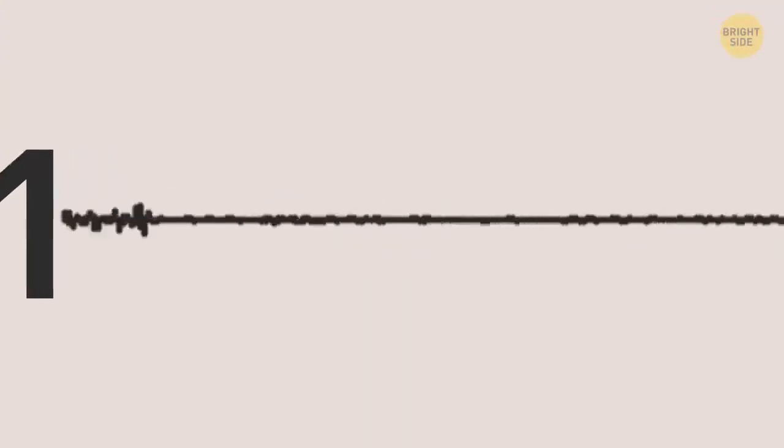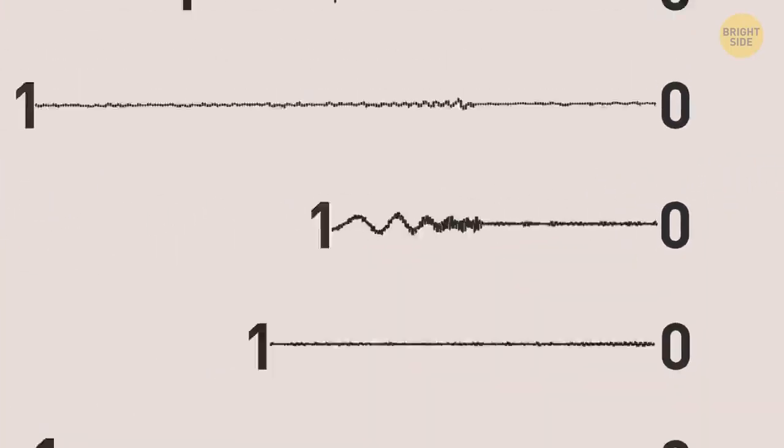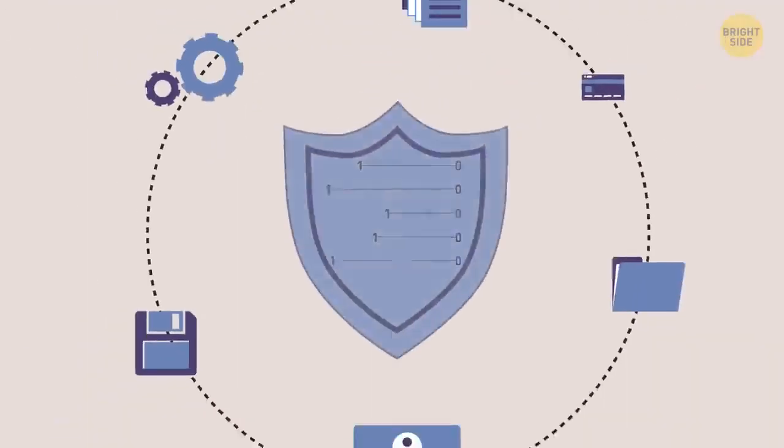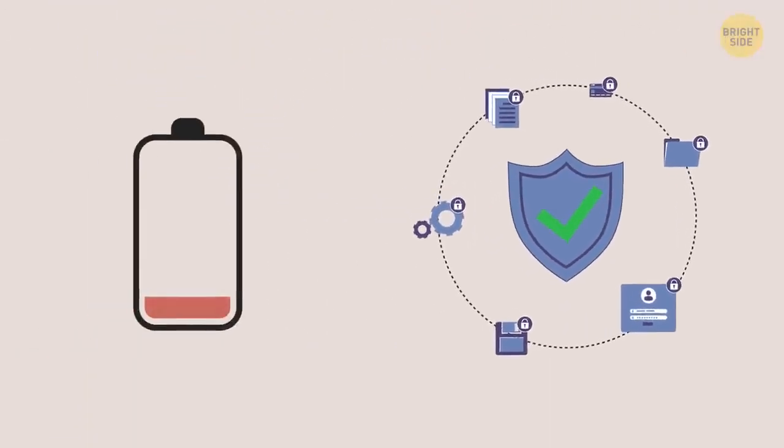That way, a 1 in the binary language represents an active electrical signal, while a 0 makes it stop. Like this, the information can be saved for as long as necessary and without a power supply.